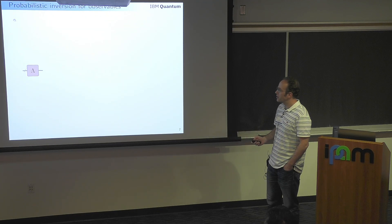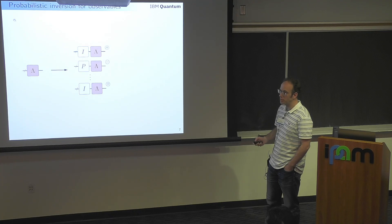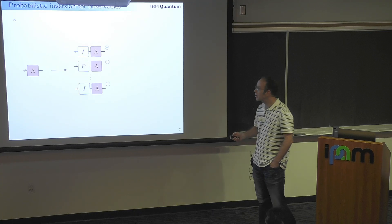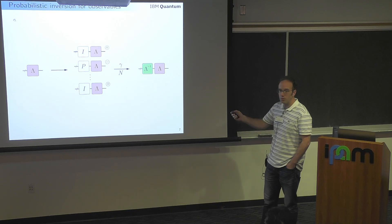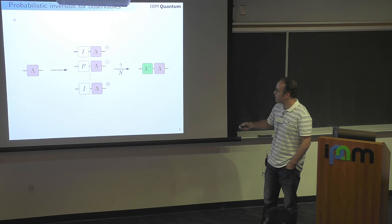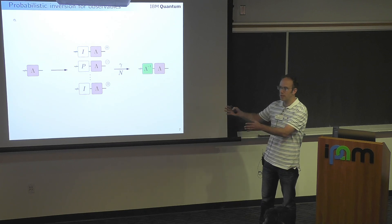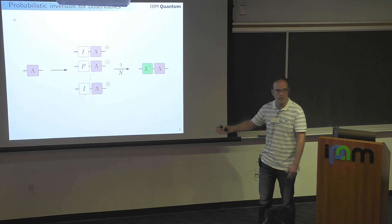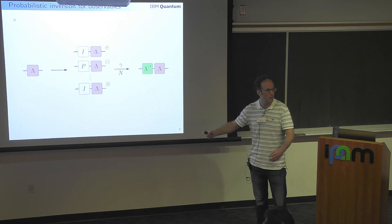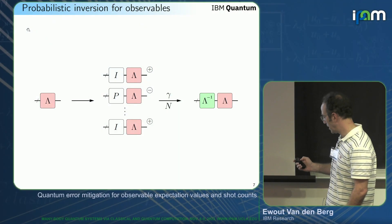Here's just an illustration: you have your noise channel, sample a couple of circuits, maintain the signs, then average and scale by γ. On average you implement your inverse noise channel, which cancels, and then you have a noiseless channel.